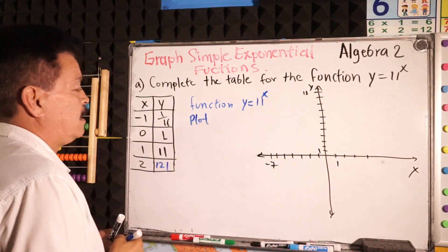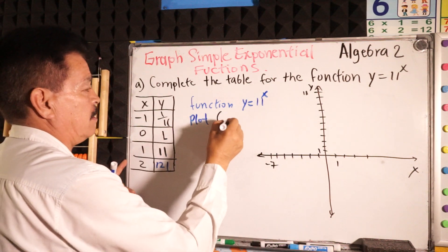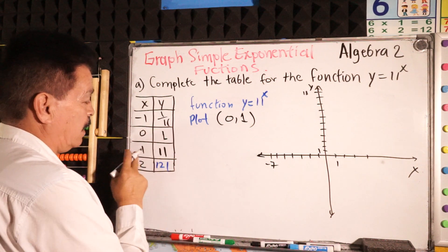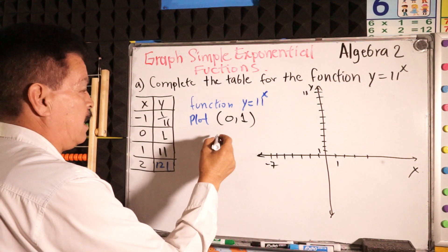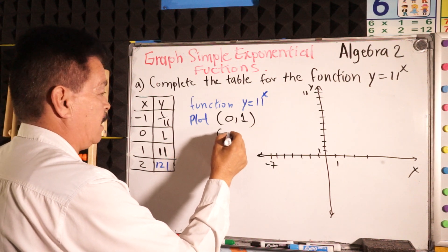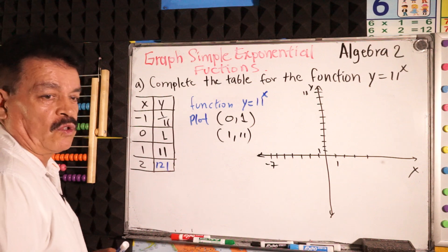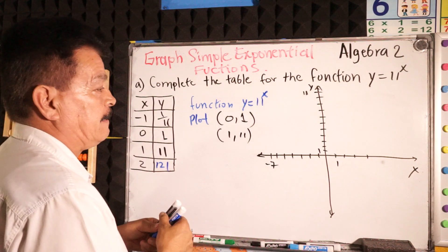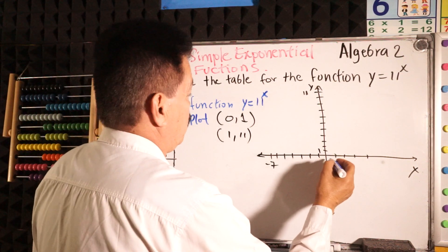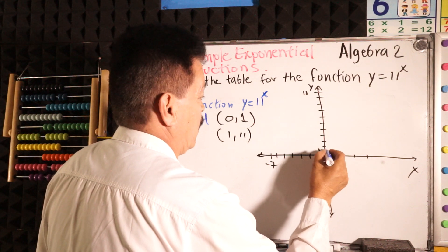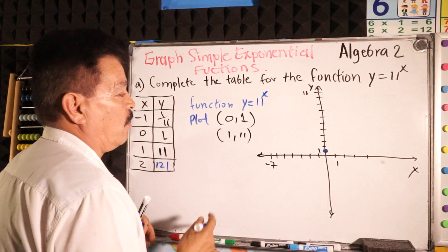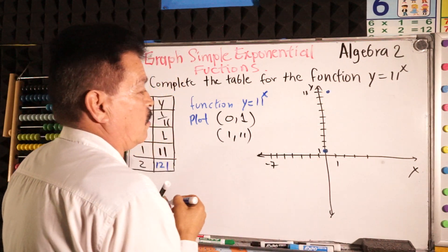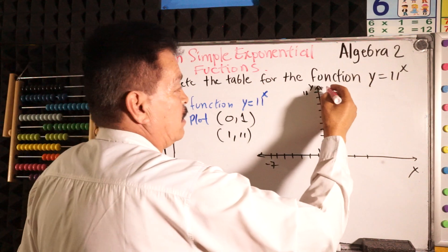Let's plot the point (0, 1) — we have it right here. And then the other point, (1, 11). With those two points we are able to make the graph. So at x equals 0, y equals 1, we have one point. At x equals 1, y equals 11, that is the other point.